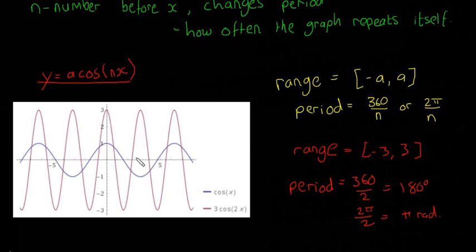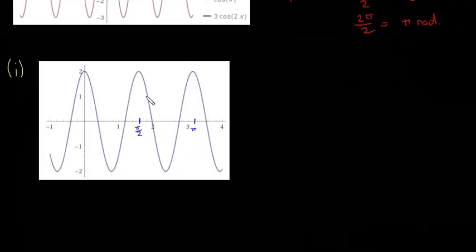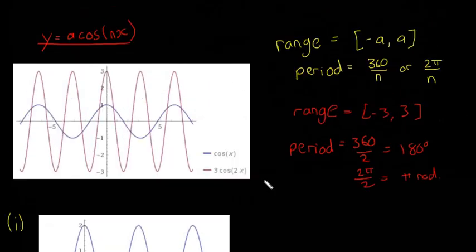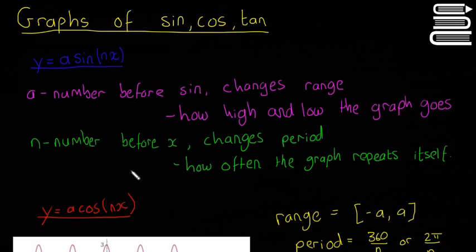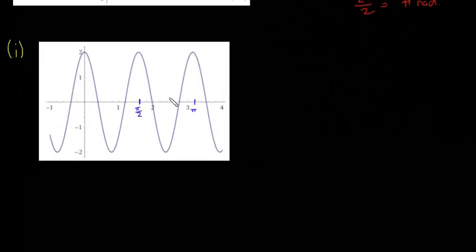Now we're going to do two examples where you look at the graph and try to work out what the formula is just by looking at it. For this graph, the first thing we have to ask is: is it sine or cos? Before going further, note that you need to know what happens when you put numbers before cos and before the x, but you don't need to know what happens when you put anything else into tan.